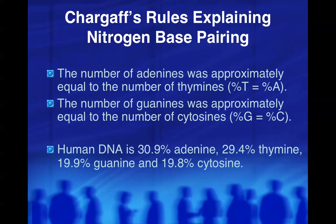Other scientists then looked at the nitrogen base pairing. What was determined, because there are equal amounts of adenine and thymine, is that those pair together — and the same with guanine and cytosine. Because they're equal percentages, that means they should be paired together. So adenine, or A, always pairs with T, or thymine, and G always pairs with C. One way to think of it: the straight letters pair with the straight letters, and the curvy letters pair with the curvy letters.